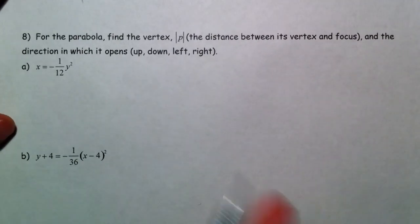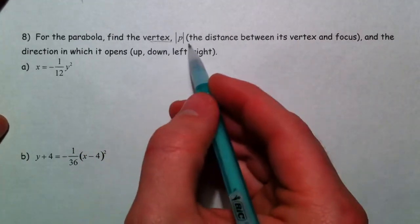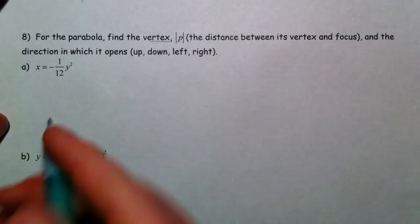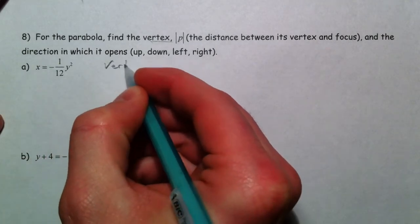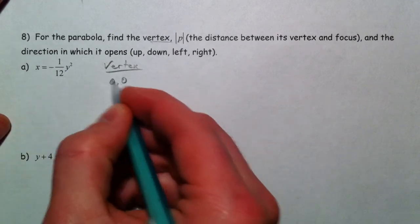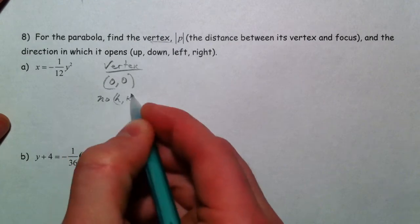And, again. For the parabola, find the vertex, the p, and the direction in which it opens. So the vertex. The vertex is (0, 0), because no h, k in this one.